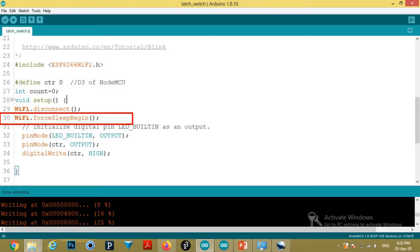This is the program which will be uploaded in NodeMCU. At line number 30, I am forcing the modem to sleep so power consumption will be low. The CTR pin is declared as GPIO0 at line number 26, and at line number